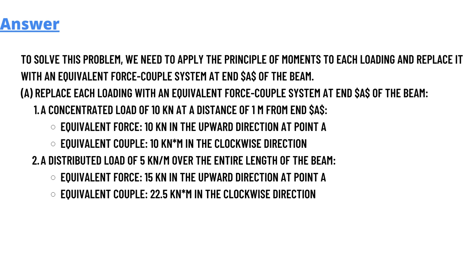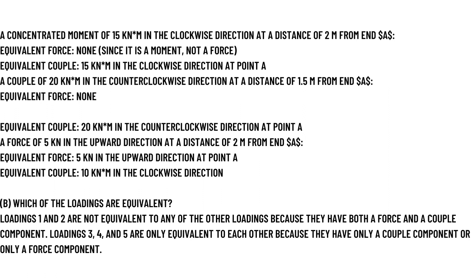For Part A, replacing each loading with an equivalent force-couple system at end A: a load of 10 KN at a distance of 1 meter gives an equivalent force of 10 KN upward at point A and an equivalent couple of 10 KN·m clockwise. A distributed load of 5 KN/m over the entire length gives an equivalent force of 15 KN upward at point A and an equivalent couple of 22.5 KN·m clockwise.